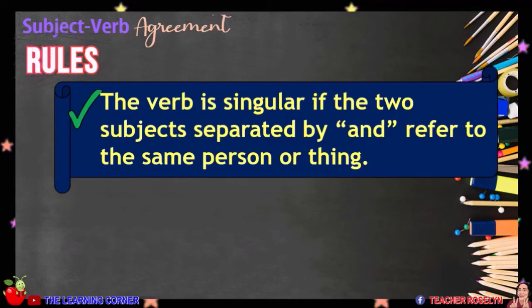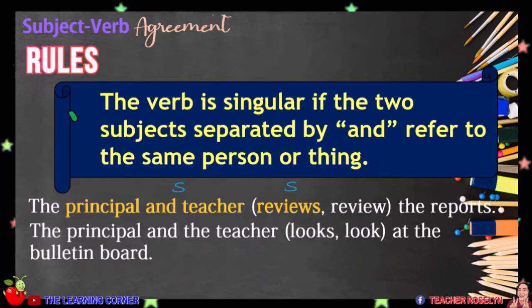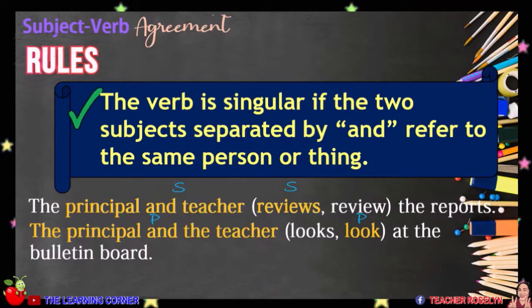There will be an exception, though. The verb is singular if the two subjects separated by AND refer to the same person or thing. For example, in this sentence, the subject 'principal and teacher' refers to only one person, so we will use the verb REVIEWS. The principal and teacher reviews the reports. If the principal and teacher are being referred to individually as two different persons, the article THE is used to determine each noun. Therefore, we have a plural subject and the correct verb to be used is LOOK. The principal and the teacher look at the bulletin board.